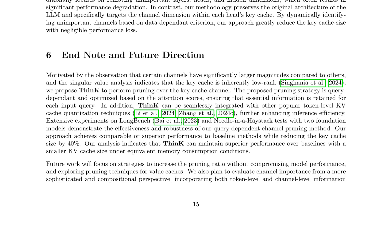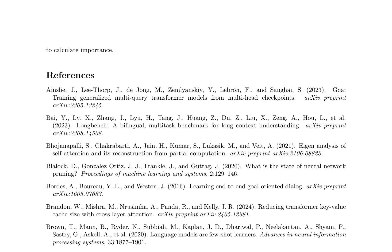Pyramid KV and Pyramid Infer consider adjusting the KV cache size across different layers. Structured pruning of LLMs has traditionally focused on removing unimportant layers, heads, and hidden dimensions, but this approach often results in significant performance degradation. In contrast, THINK preserves the original architecture of the LLM and specifically targets the channel dimension within each head's key cache. THINK can be seamlessly integrated with other popular token-level KV cache quantization techniques, further enhancing inference efficiency. Extensive experiments on LongBench and Needle in a Haystack with two foundation models demonstrate the effectiveness and robustness of the query-dependent channel pruning method.